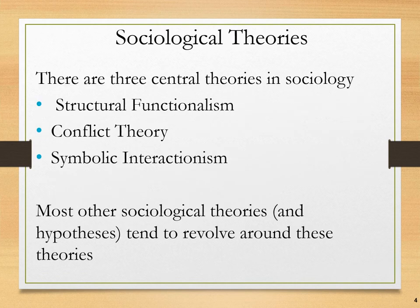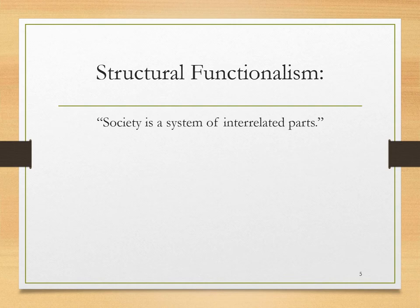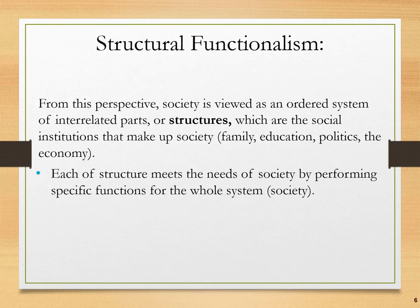There are three core theories to sociology: structural functionalism, conflict theory, and symbolic interactionism. Most other sociological theories and hypotheses tend to revolve around these three theories. First we're going to talk about structural functionalism, which effectively — the shorthand — is that society is a system of interrelated parts. From the perspective of structural functionalism, society can be viewed as an ordered system of interrelated parts, or social structures, which are the social institutions that make up our society.